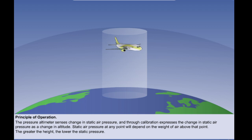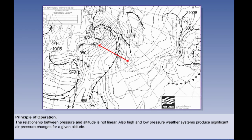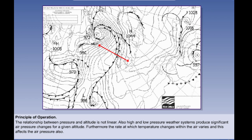By measuring pressure, the altimeter measures height or altitude. Unfortunately, the relationship between pressure and altitude is not linear. Additionally, high and low pressure weather systems can produce significant air pressure changes for any given altitude. If we look at the isobar chart shown here, we can see that if we were to travel from the UK to Iceland at mean sea level, the air pressure above us will change from around 1036 millibars or hectopascals to approximately 996 millibars or hectopascals. The matter is further complicated because the rate at which temperature changes within the air will vary considerably and this affects the air pressure also.